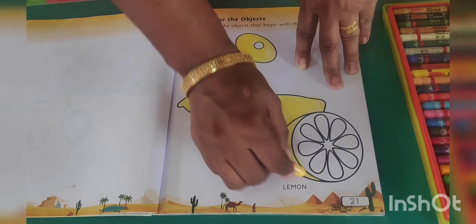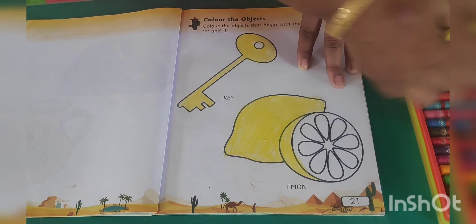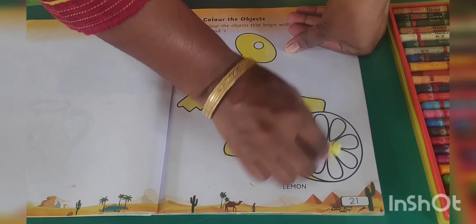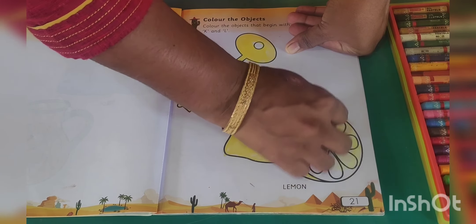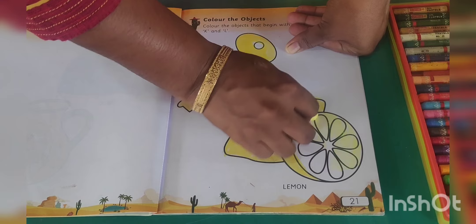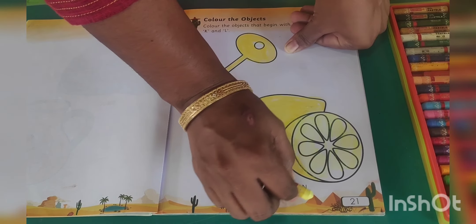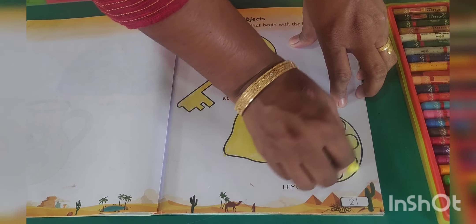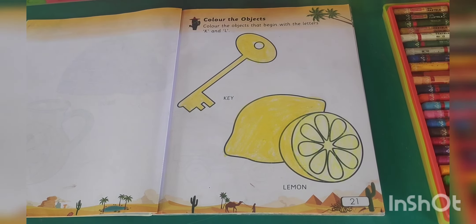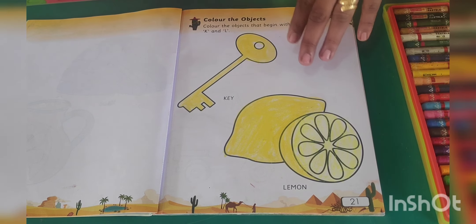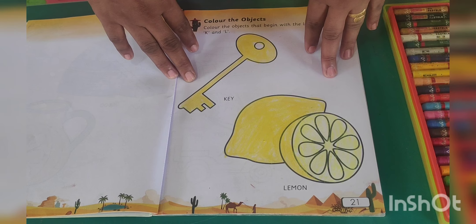Lemon colour. Don't scribble here. Inside light colour. L says L, L for lemon. Like this, you have to give the colour.